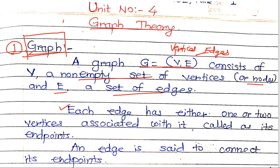In a graph, each edge has either one or two vertices associated with it. These vertices are called endpoints. Every edge is said to connect its endpoints.